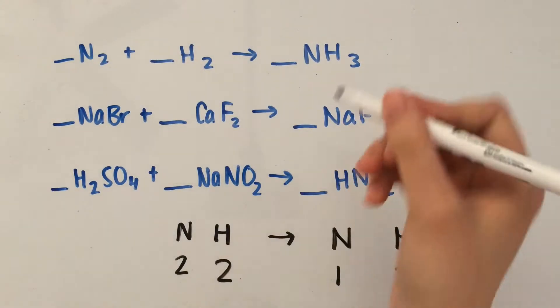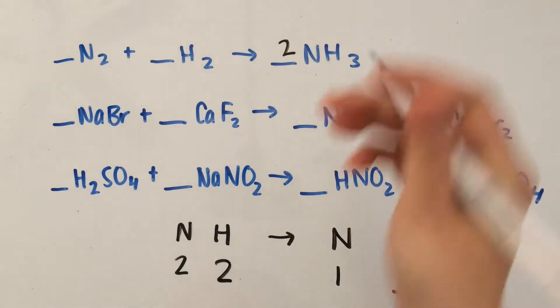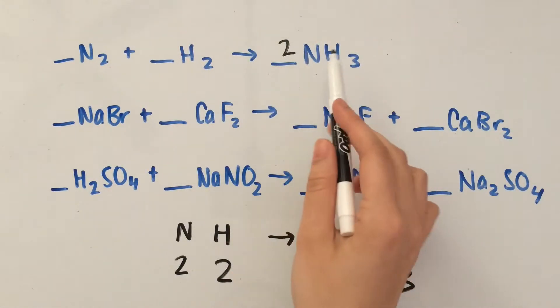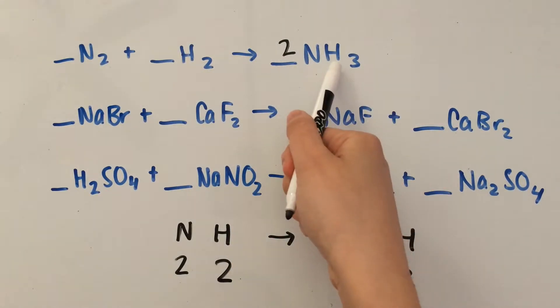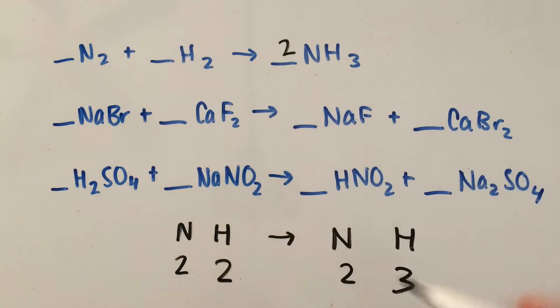Let's see what happens when we put a two here. That means we're going to multiply this whole thing by two. Instead of one N we'll have two N's, and instead of three H's we'll multiply that by two to get six H's.